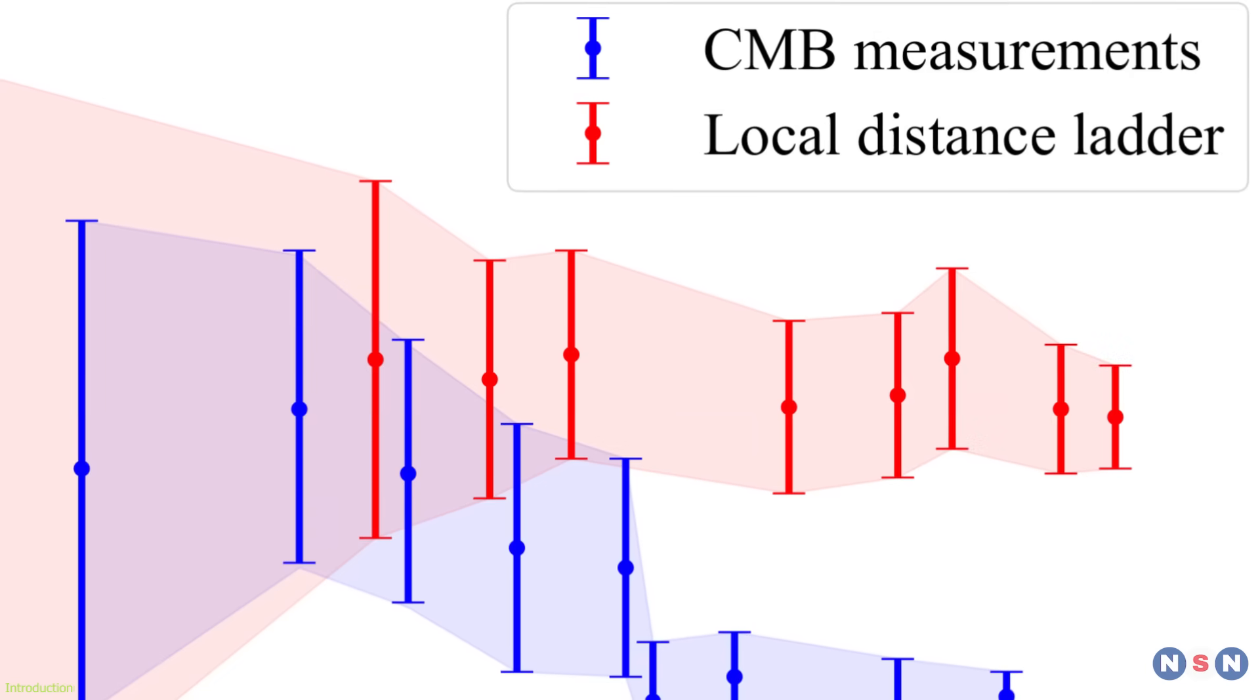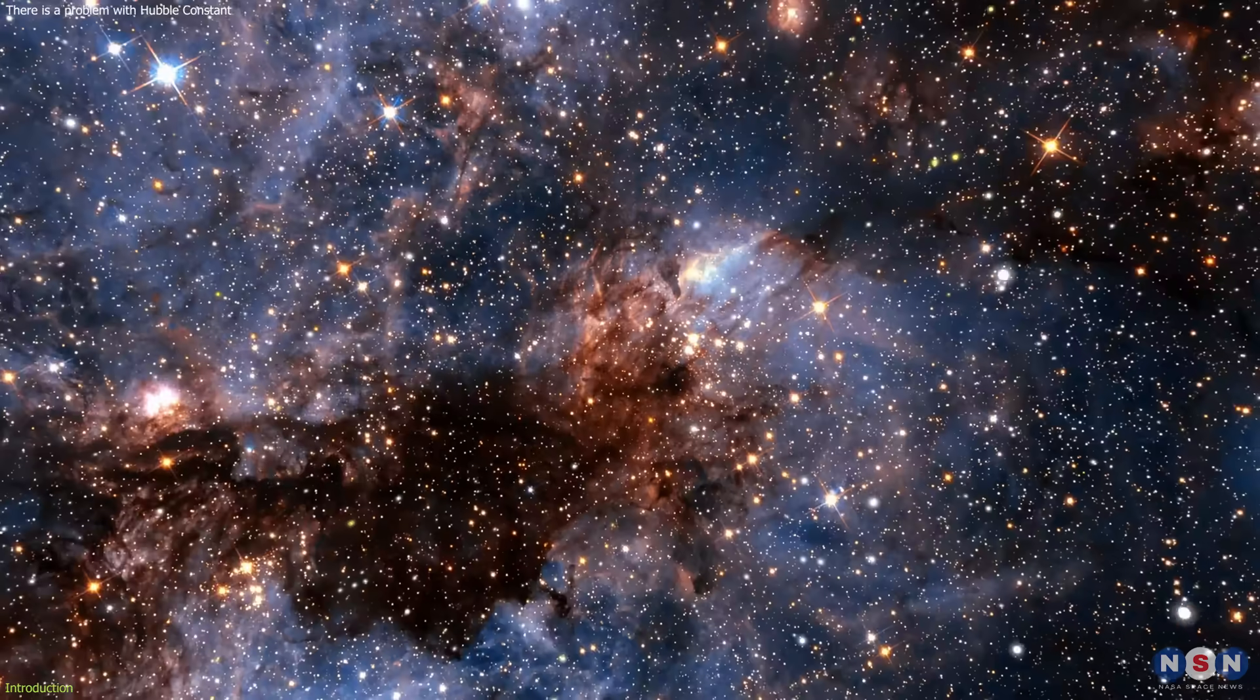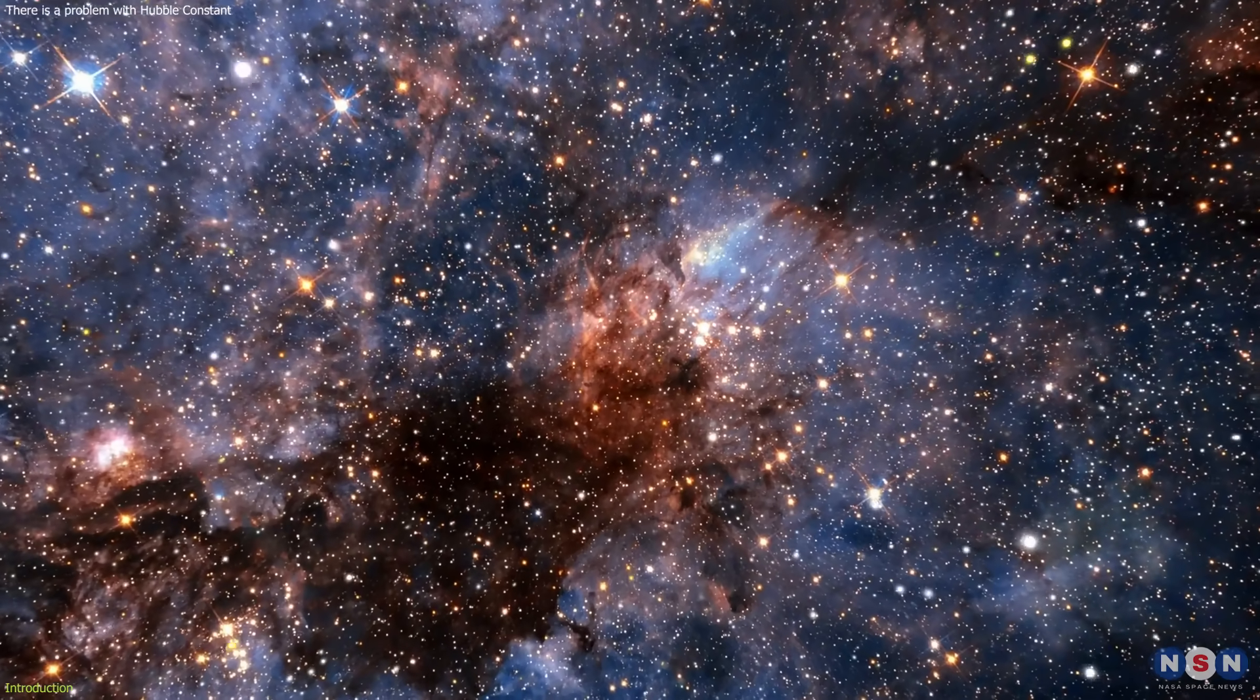But there is a problem. Different methods of measuring the Hubble Constant give different results, and this discrepancy may require some new physics to explain it.